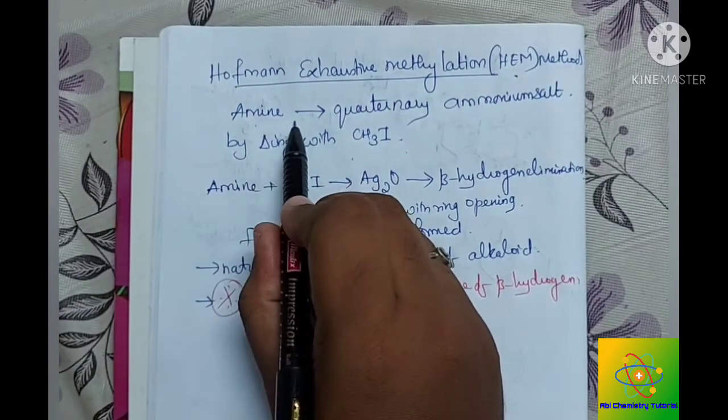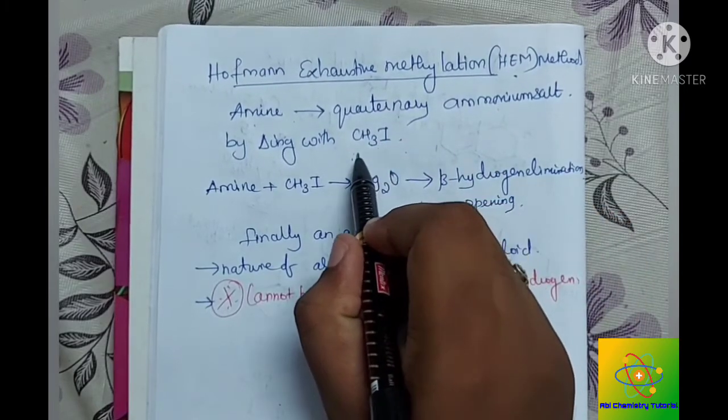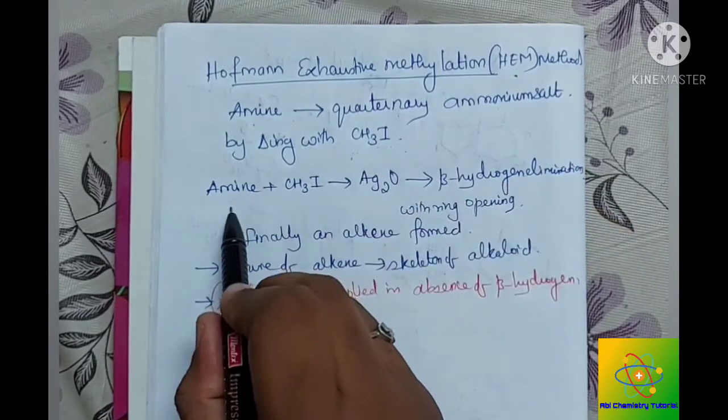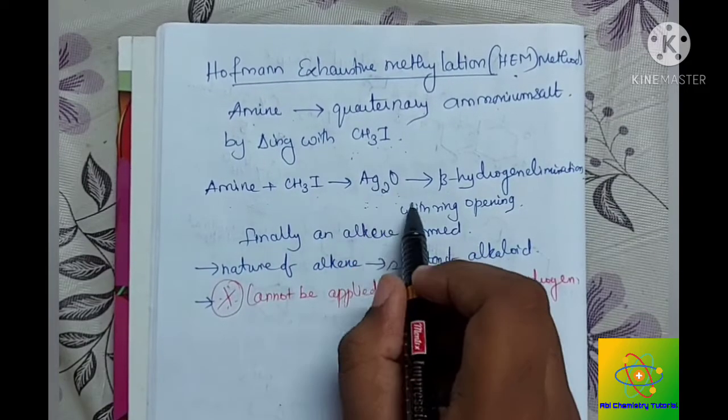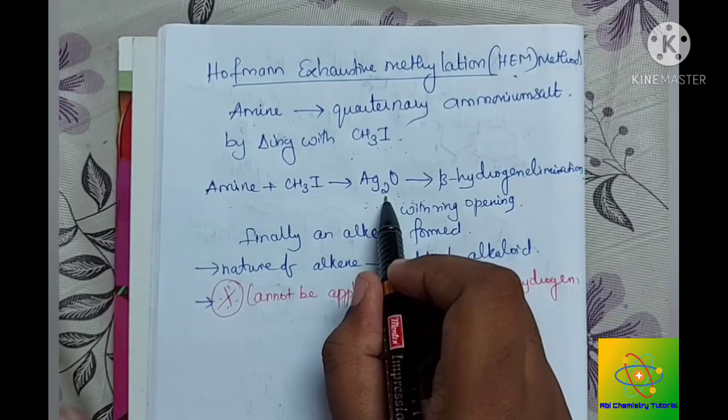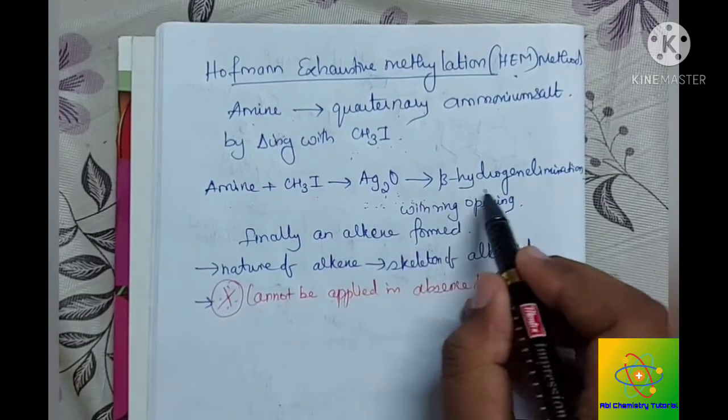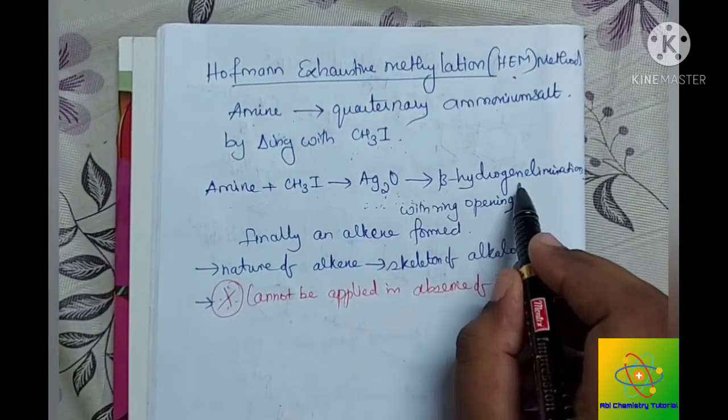An amine is converted into quaternary ammonium salt by treating with methyl iodide. So amine and methyl iodide are treated to form a quaternary ammonium salt. To that we are adding moist silver oxide Ag2O, and during this process OH will be formed in the place of I-, and then a beta hydrogen eliminates.